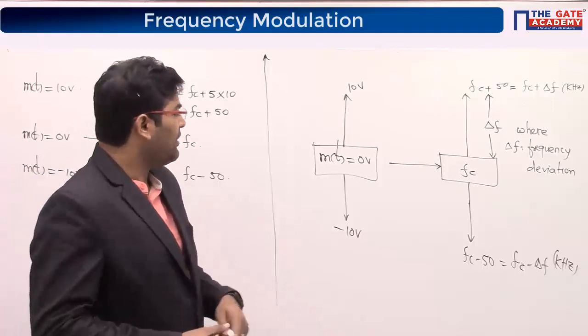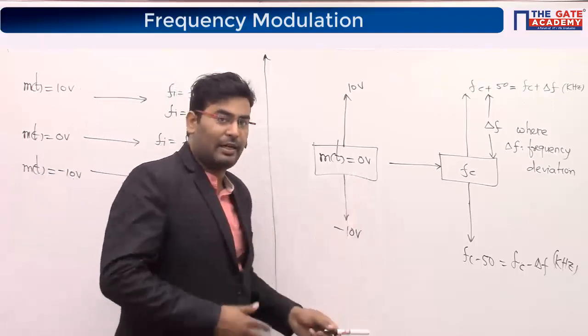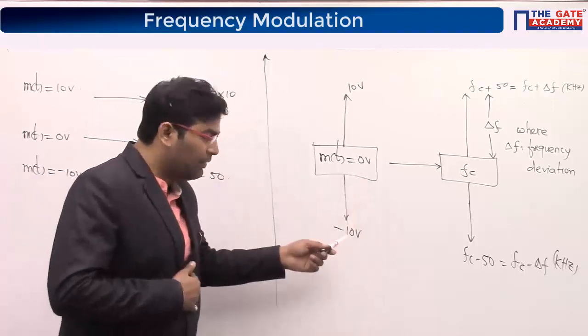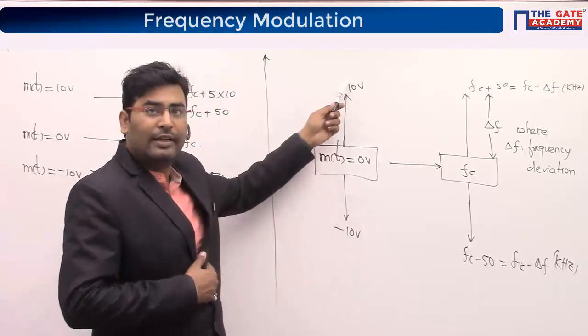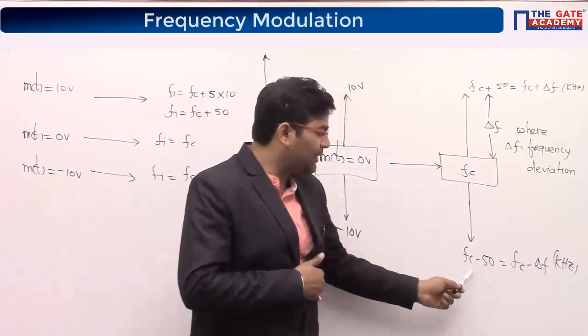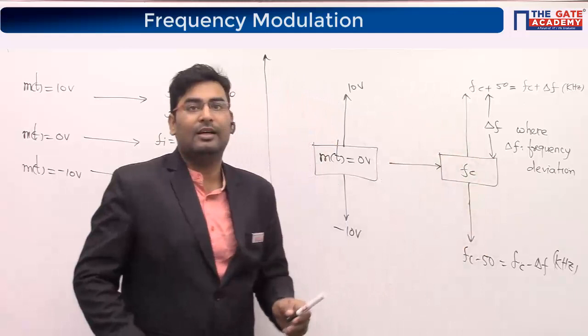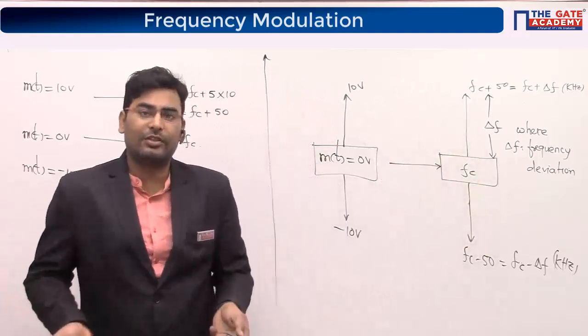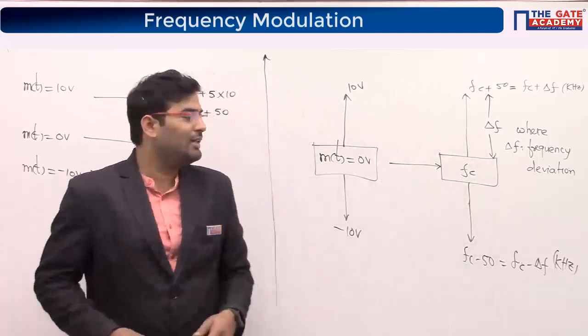The carrier frequency is changing from fc − 50 to fc + 50, and frequency modulation is all about varying the amplitude of the message signal so that the carrier frequency changes accordingly. I have taken a very basic fundamental example to make you understand this.